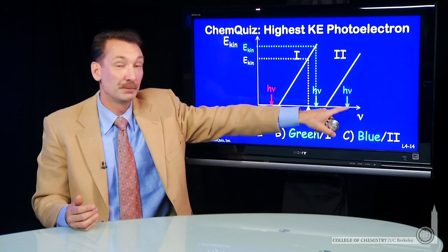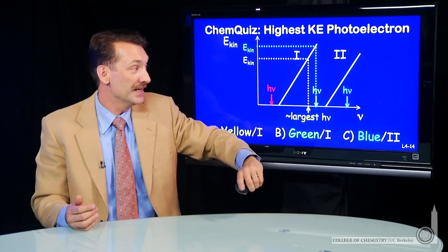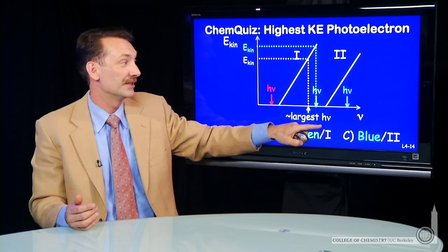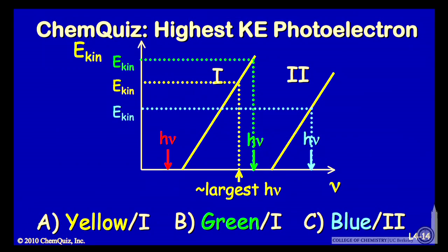What about blue photon striking metal two? Well, here's the blue region. Somewhere in here we'll have a photon, but it'll strike this metal with the higher threshold energy. So you can read the kinetic energy right off the plot.